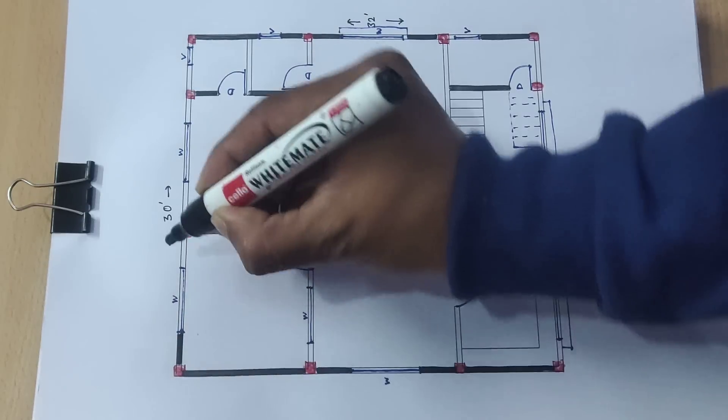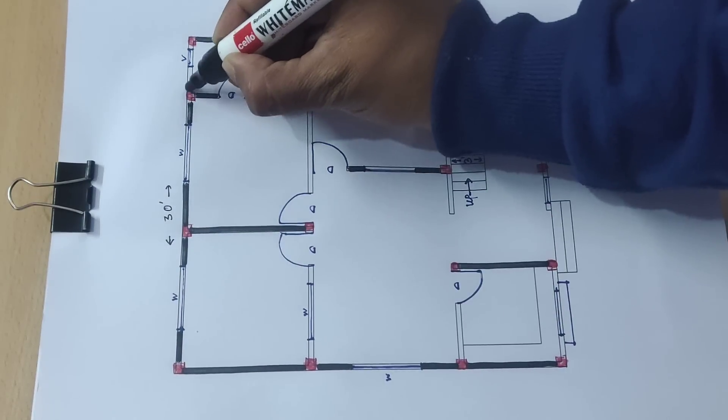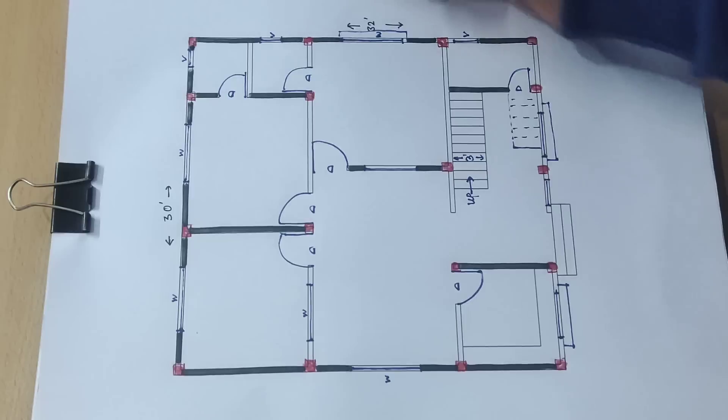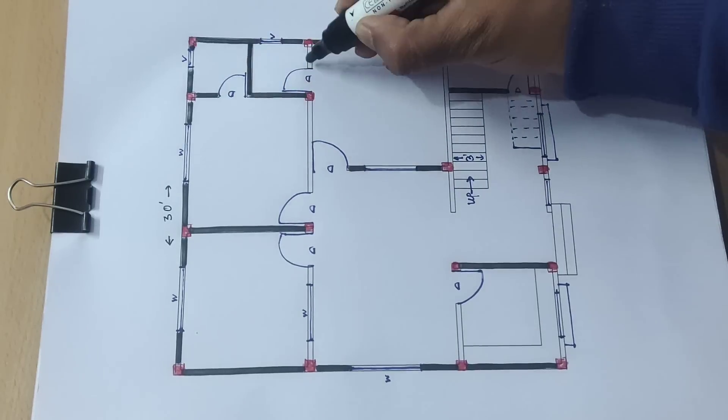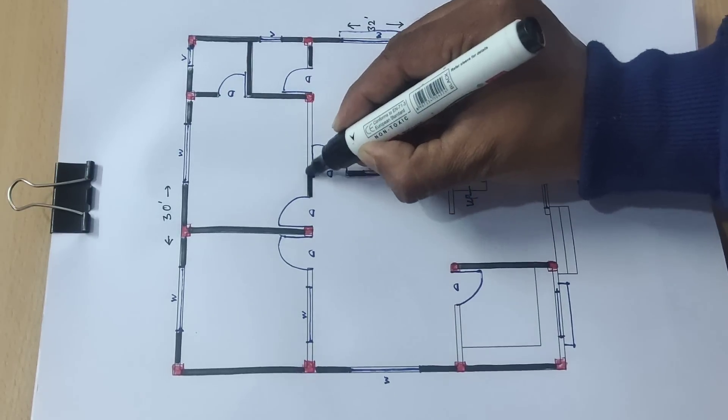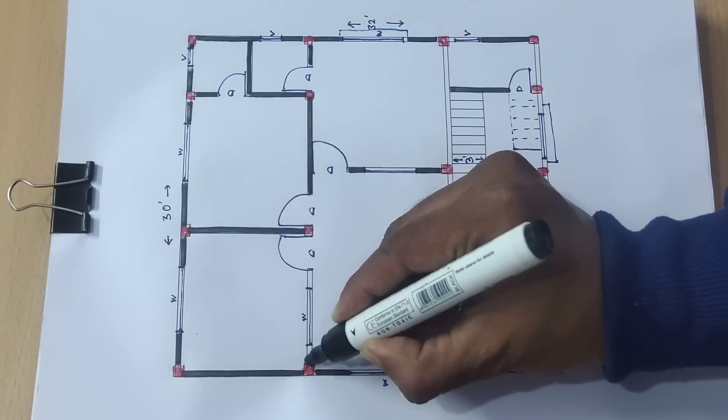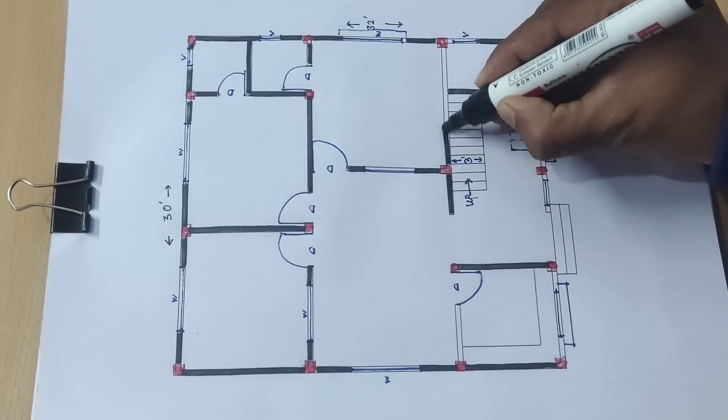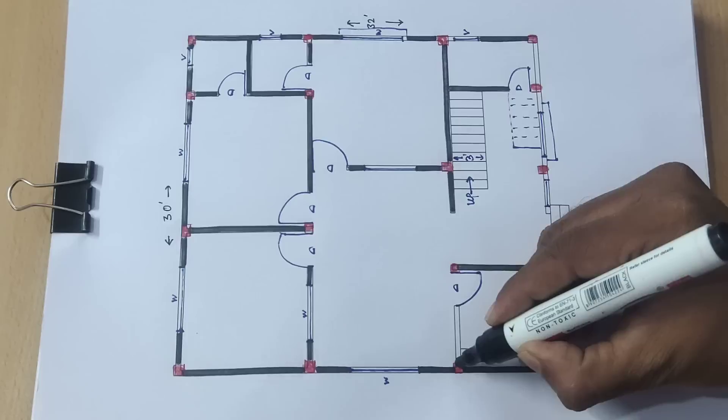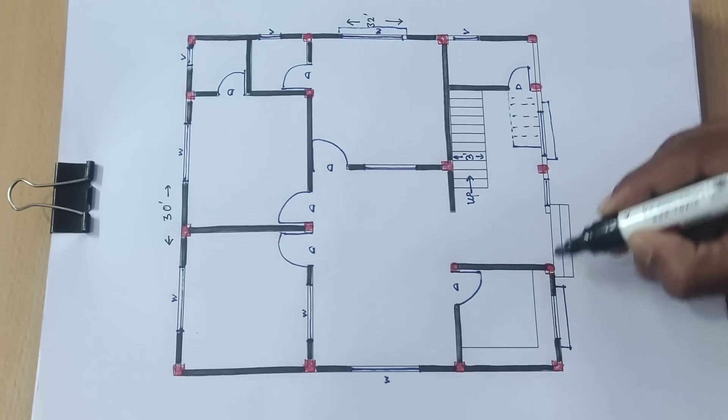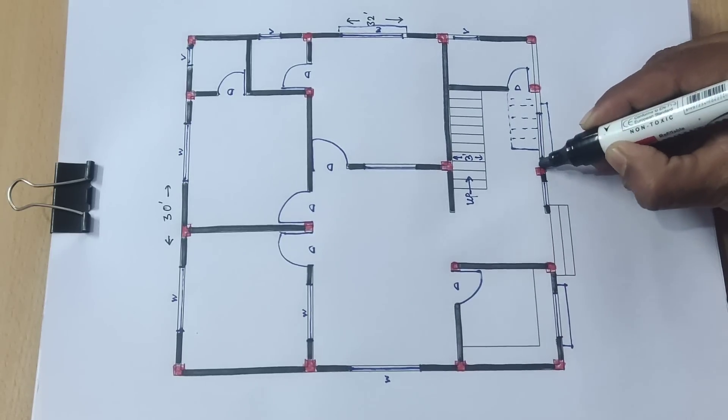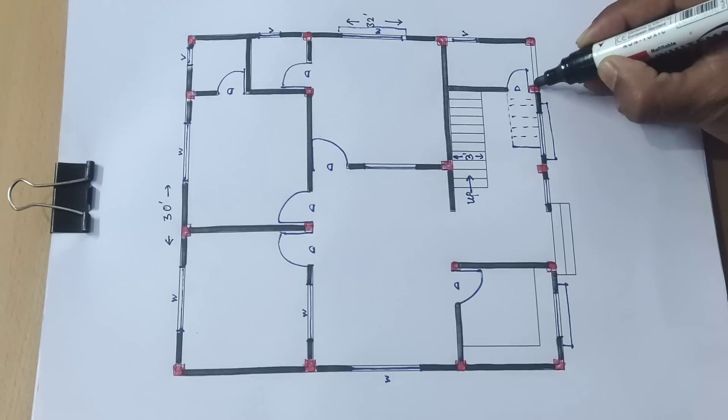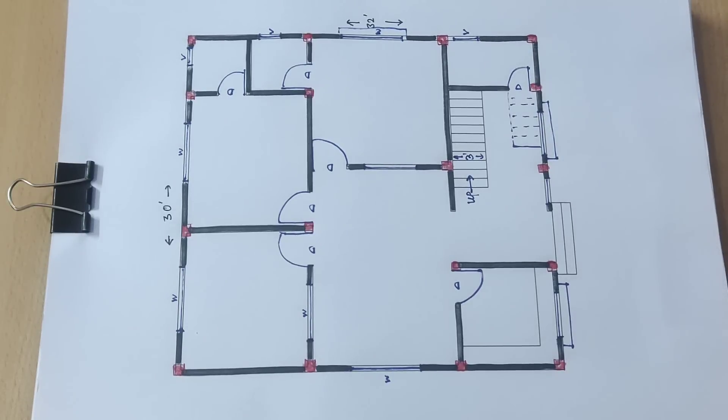Next, this is outside wall and inside wall. This is internal partition wall. This is partition wall and this is partition wall. Internal partition wall complete.